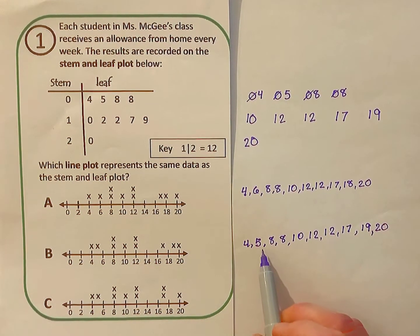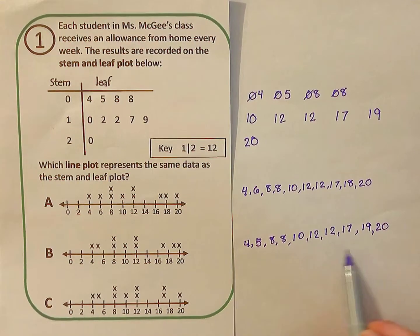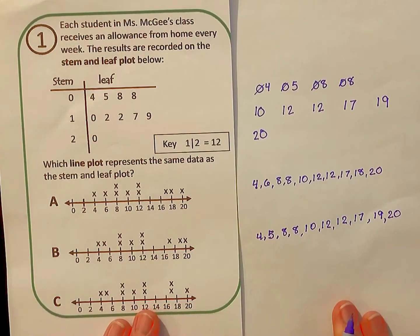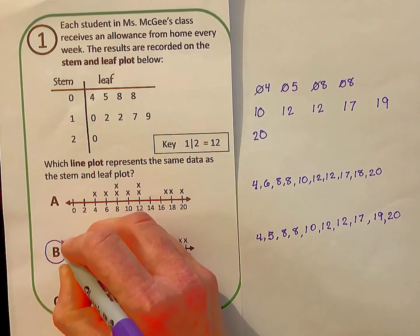When I compare these numbers to those from my stem and leaf plot, I realize they're all the same. So I can go ahead and mark B as my answer.